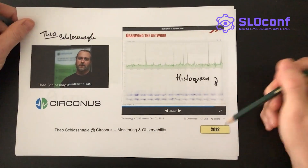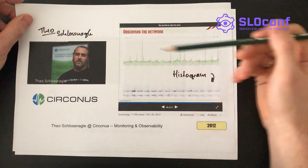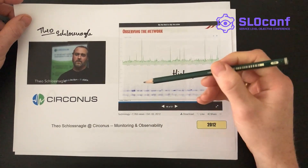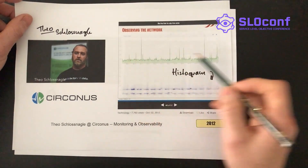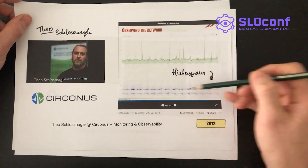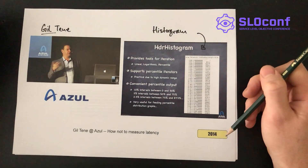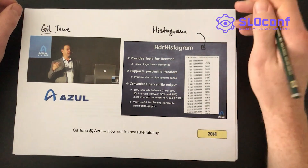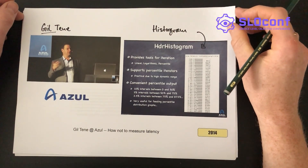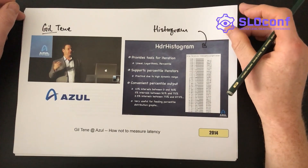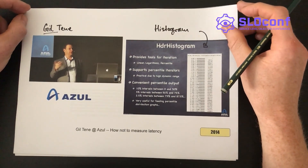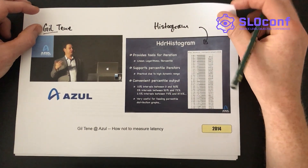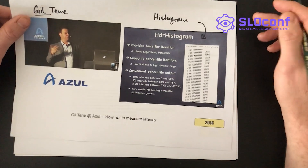Three years later, in 2012, we see histograms first showing up in monitoring products. This is my former boss Theo demoing at a talk called "Monitoring and Observability" in 2012, histograms used for API latencies. Gil Tene of Azul Systems, two years later in 2014, talks about how not to measure latency — primarily about JVM profiling and GC latencies, but a very insightful talk highlighting systematic difficulties with measuring latency. As part of this effort, he also published a data structure called the HDR histogram, which is very relevant, very capable, open source, and still in use.